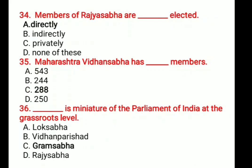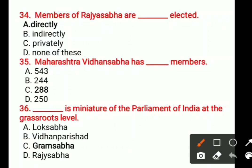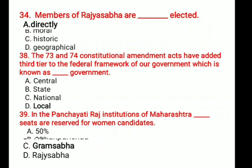Question number 36: Blank is a miniature of the parliament of India at the grassroot level. At the grassroot level there is Gram Panchayat, and Gram Sabha is the meeting with all the people in the village. Options are: A. Lok Sabha, B. Vidhan Parishad, C. Gram Sabha, D. Rajya Sabha. The correct answer is Gram Sabha.